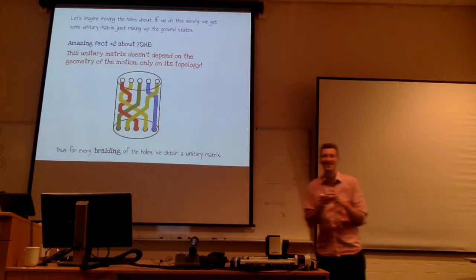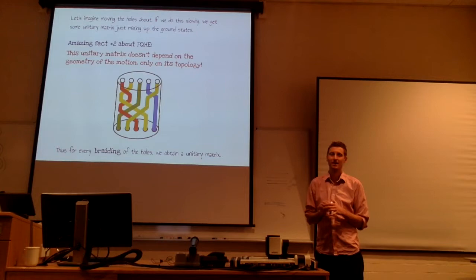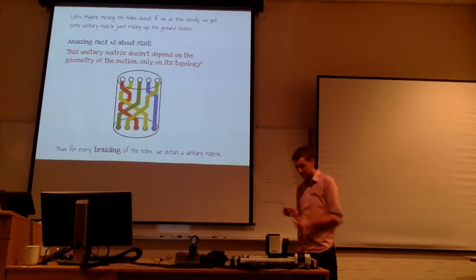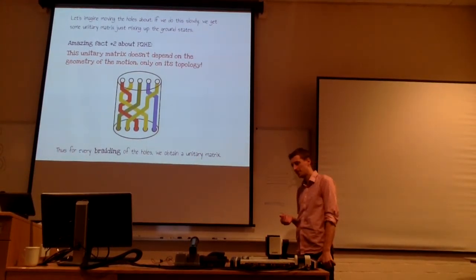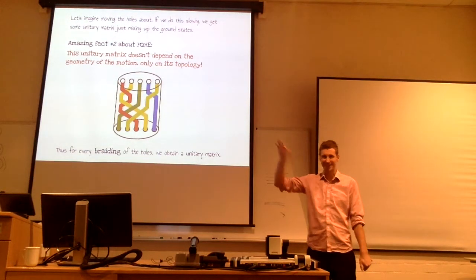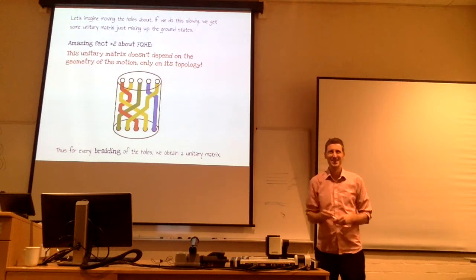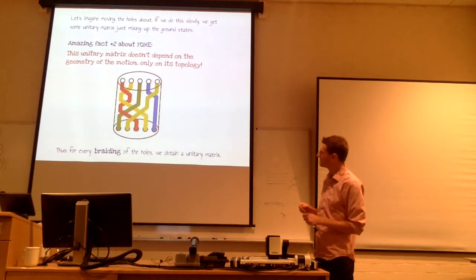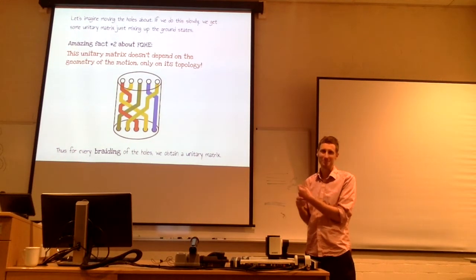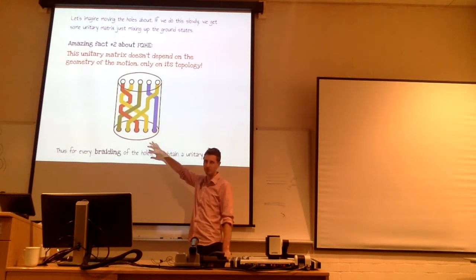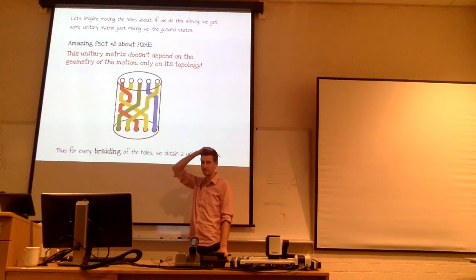Second part of the question: the unitary matrix that comes from braiding — is that some kind of representation? Yes, all the representations you get here come from the universal R-matrix acting in some representation of the quantum group. The braid group action on punctured disks corresponds to those representations. It's a little bit of work to see how the braid group on punctured disks corresponds to those representations, but yes, you can think about them in those terms.